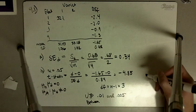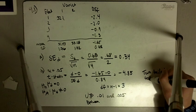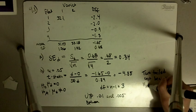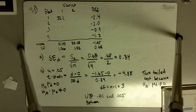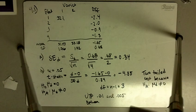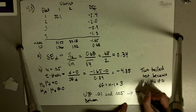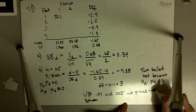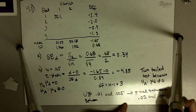But this is a two-tailed test, because our alternative hypothesis is that mu-d is not equal to 0. It's not that the mean difference is greater than 0 or less than 0 — it's not equal to 0. So it's a two-tailed test, which means our p-value is going to be between 0.02 and 0.01.